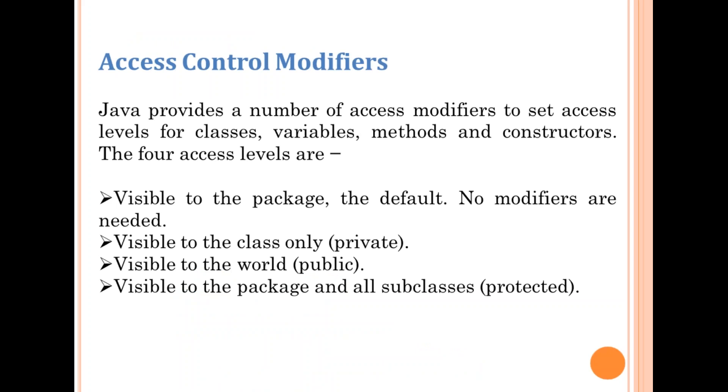Access control modifiers. Java provides a number of access modifiers to set access levels for classes, variables, methods and constructors. The four access levels are: visible to the package (the default, no modifiers are needed), visible to the class only (private), visible to the world (public), and visible to the package and all subclasses (protected).